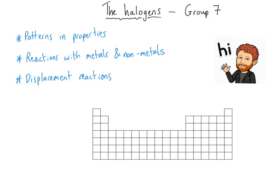Hello everybody and welcome to this GCSE chemistry video about the halogens, that is group 7 in the periodic table, which is the yellow group I've highlighted on my periodic table. In this video we're going to be looking at the patterns in the different properties of the group 7 elements as we go down the group, the reactions that group 7 elements have with metals and non-metals, and then we're going to finish by taking a look at the displacement reactions — the reactions between the group 7 elements and a solution of one of the group 7 elements' salts.